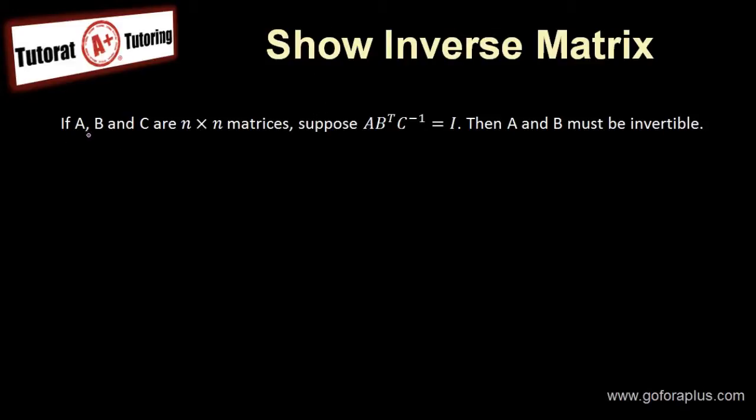In this case, I'm telling you that A, B, and C are all square matrices, and suppose that AB^T C^(-1) = I, then you have to show that A and B must be invertible.